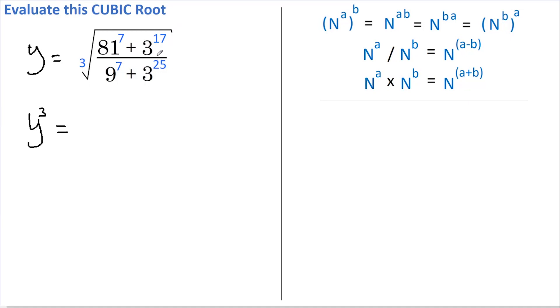Okay, the first thing to notice is that 3, 9, and 81 are all on your three power table, so hopefully this isn't going to be too difficult. The first thing I'm going to do is convert all the bases to 3. So on the top we have 3 to the power of 4, and that's all raised to the power of 7, plus we have 3 to the 17 still.